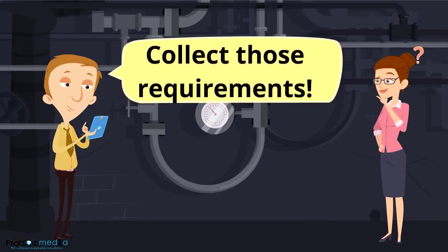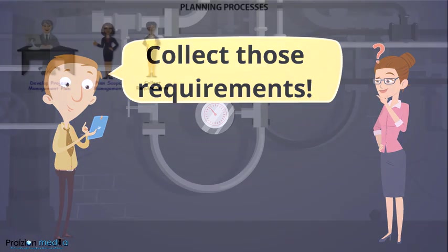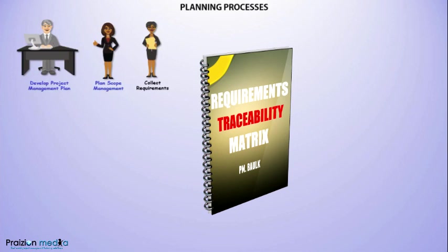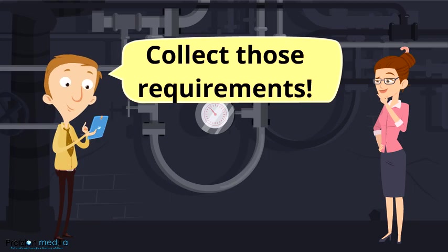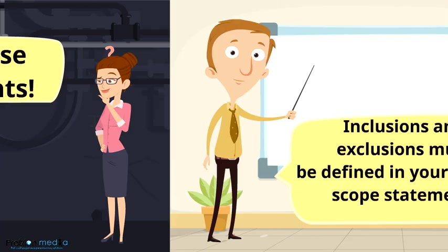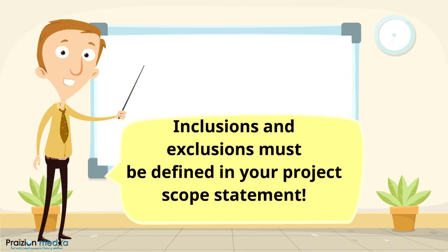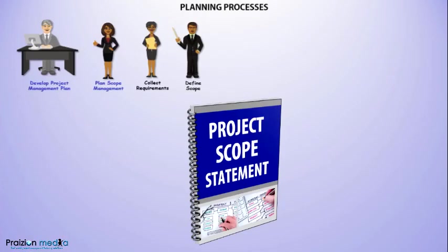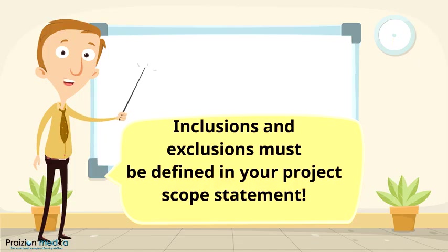The next process is Collect Requirements, where requirements are actually collected. A key output is the Requirements Traceability Matrix, which maps requirements to their origin. The next process is Define Scope, where we examine what is an inclusion and what is an exclusion for this project. This is documented in a Project Scope Statement, which also describes the major characteristics of the deliverable and revisits constraints and assumptions to ensure all the scope of work needed to meet requirements is mapped out.